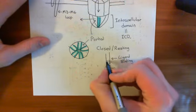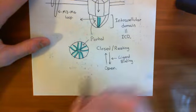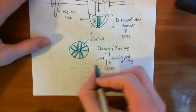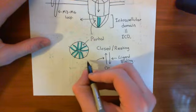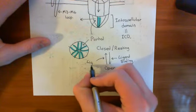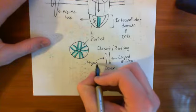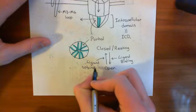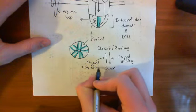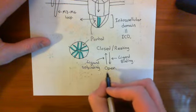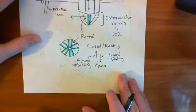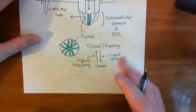What can then happen is the open state can go back to the closed state, and what will trigger that is ligand unbinding. If you lose the ligand, you'll go from being in the open state back to being in the closed state. So ligand binding takes you into the open state, and ligand unbinding will take you back into the closed-resting state.